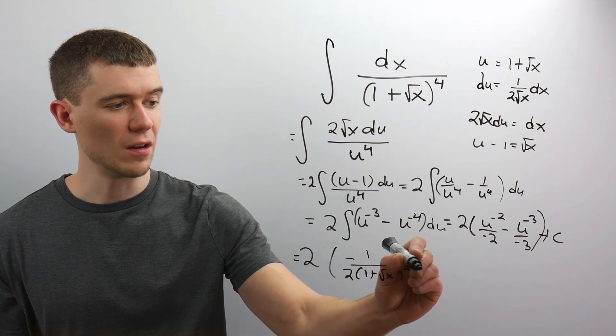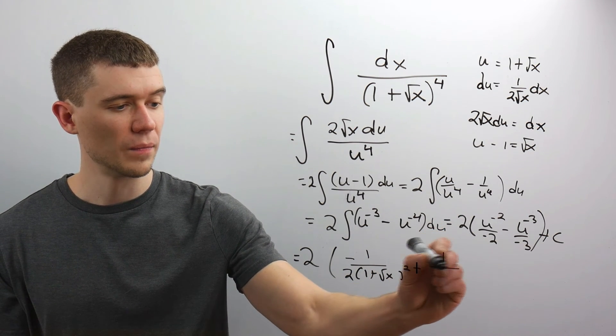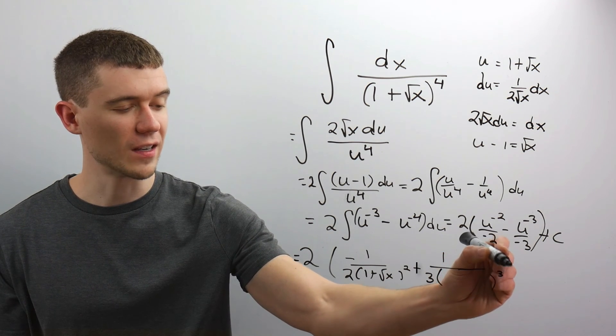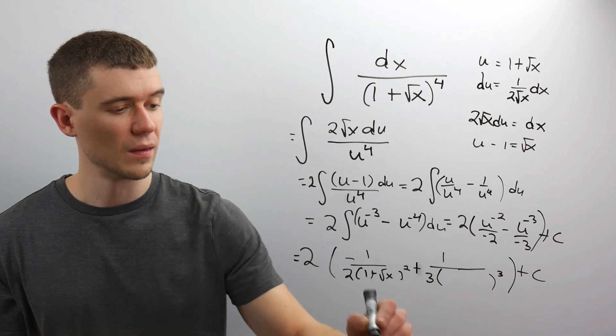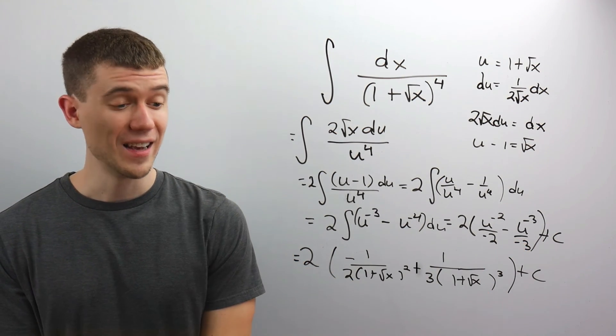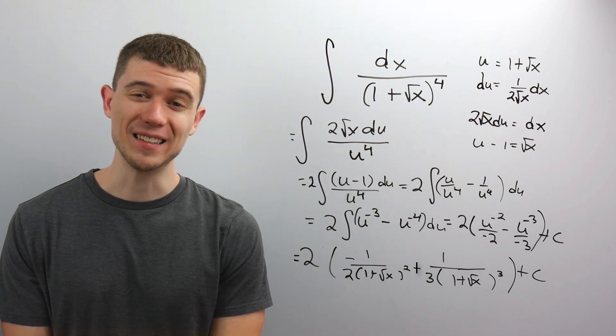And then same deal here. I'd have minus 1 third. I'll bring this downstairs to make it a positive exponent. Again, u was 1 plus square root x. And then, hey, there we go. There is a nice antiderivative.